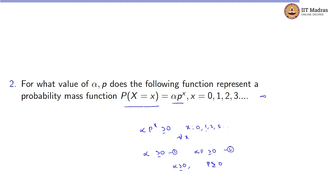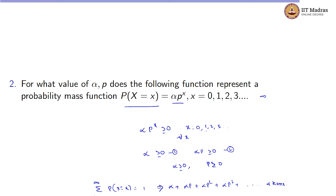There is one more condition: the sum of all probabilities for x = 0, 1, 2, and so on to infinity should be equal to 1. That is, sigma from x = 0 to infinity of p(X = x) should equal 1. Substituting the values, the expression becomes alpha + alpha·p + alpha·p² + alpha·p³ + and so on, which should equal 1.